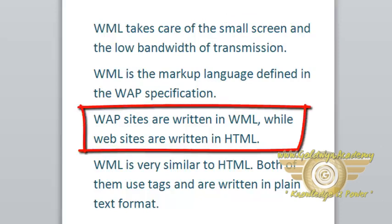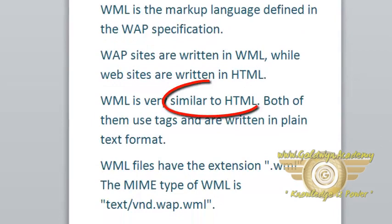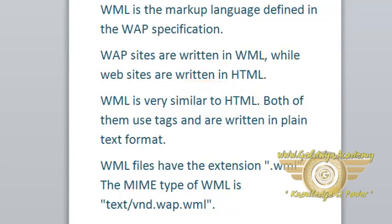WAP sites are written in WML while regular websites are written in HTML. WML is very similar to HTML. Both of them use tags and are written in plain text format. WML files have the extension .wml, and the MIME type of WML is text/vnd.wap.wml.